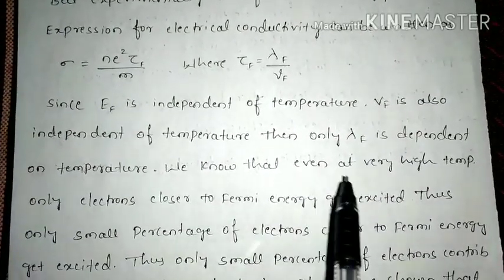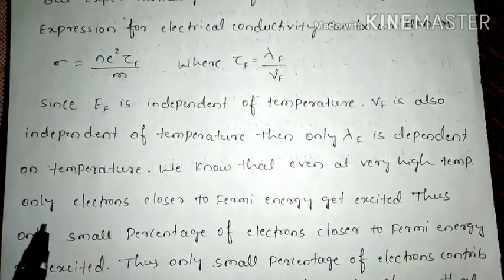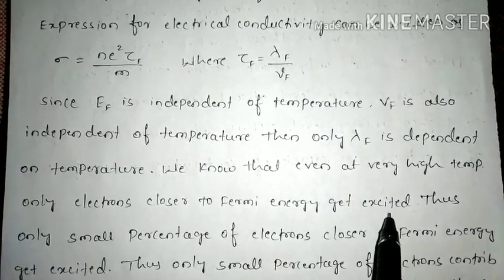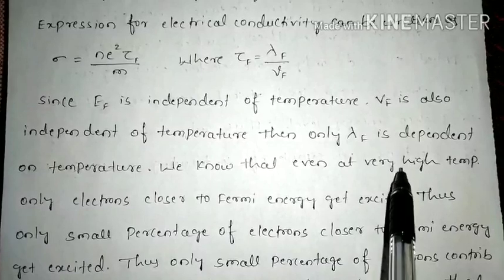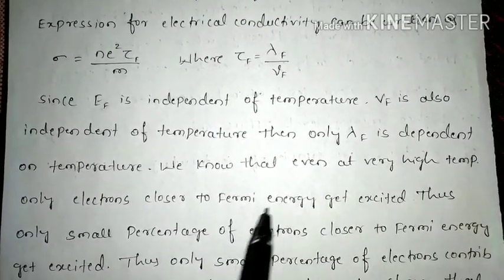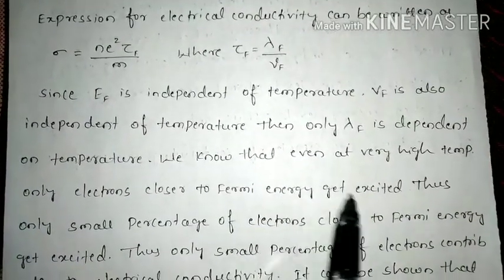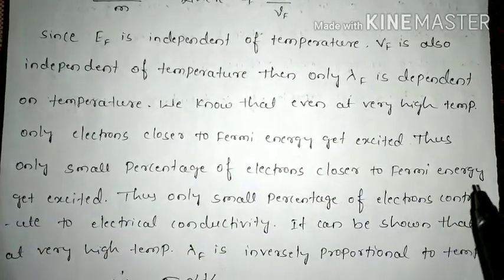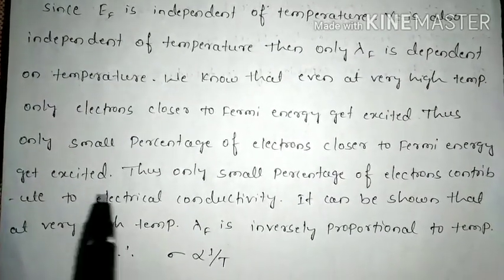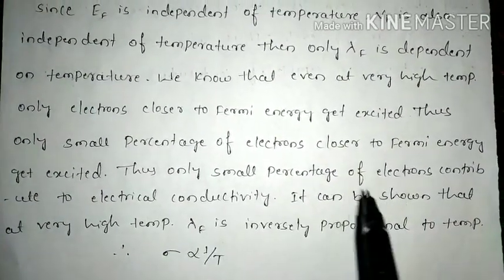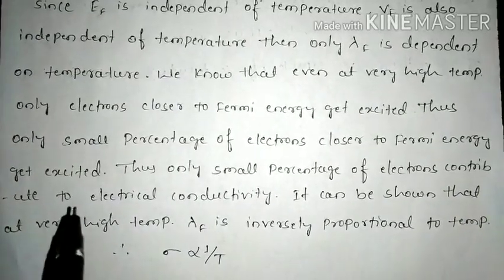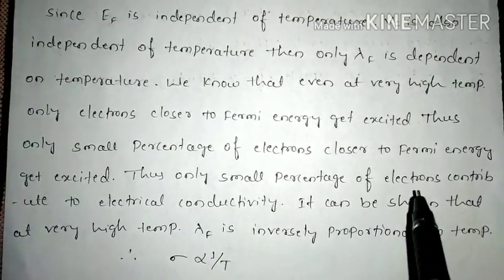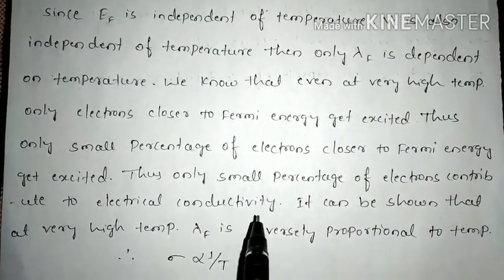At high temperature, only electrons closer to the Fermi energy get excited. When temperature increases, only the electrons close to the Fermi energy get excited. Thus, only a small percentage of electrons contribute to electrical conductivity — unlike classical mechanics, which says all electrons contribute.